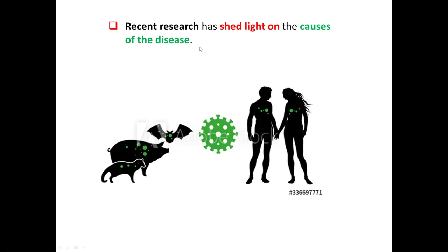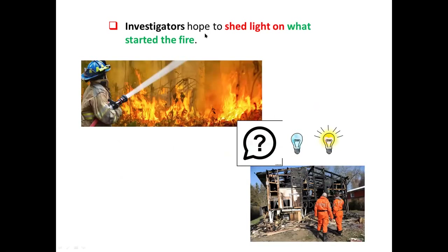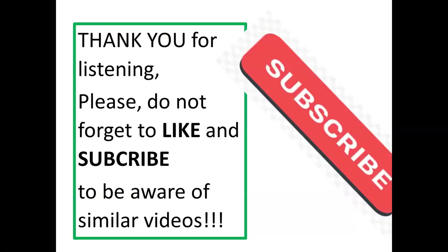The last example: 'Investigators hope to shed light on what started the fire.' Here the investigators are not certain but are hopeful — they have good feelings about finding out what caused the fire. They are optimists. They want to shed light on this question — they want to find the answer. Thank you for listening. Don't forget to like and subscribe. See you in the next video.